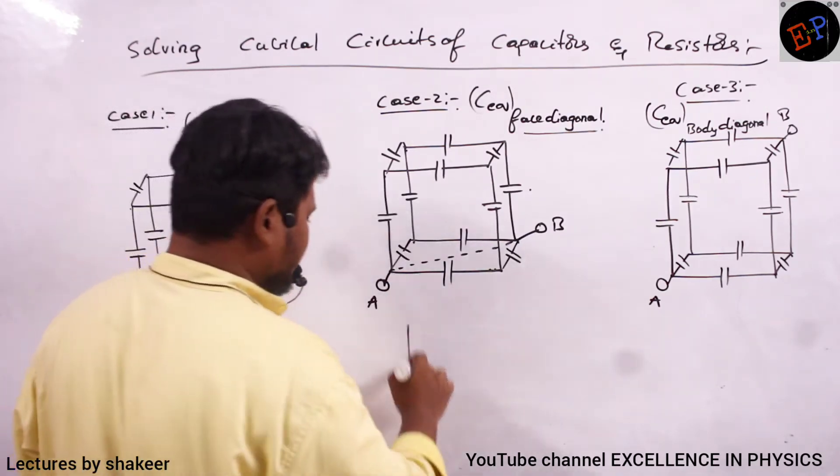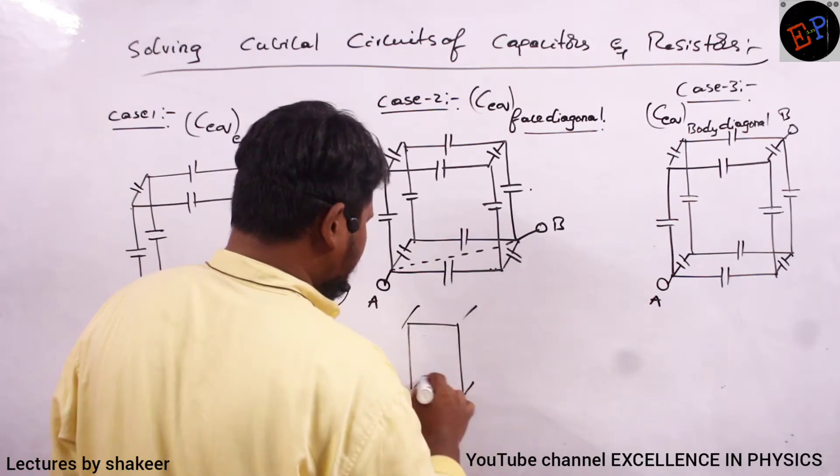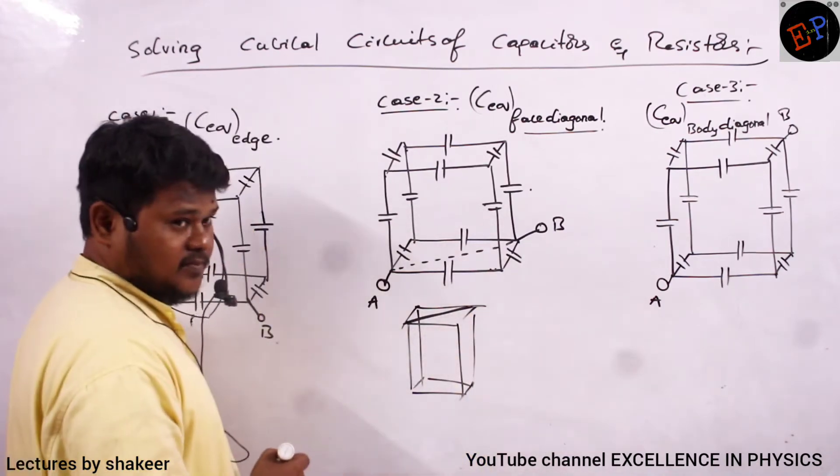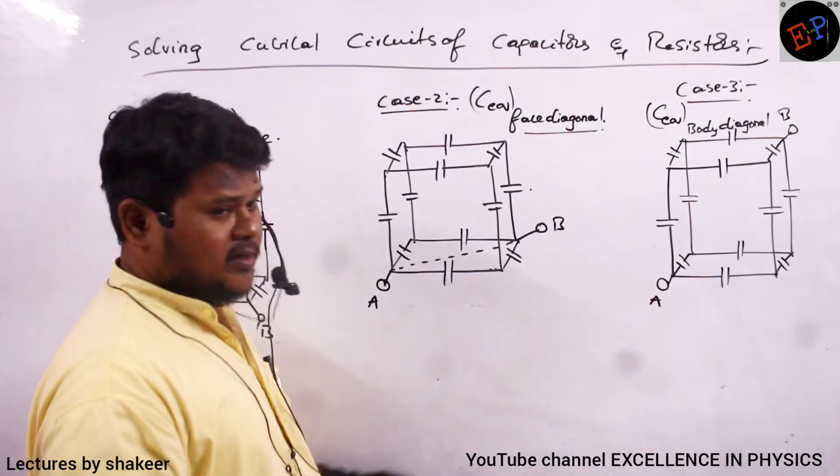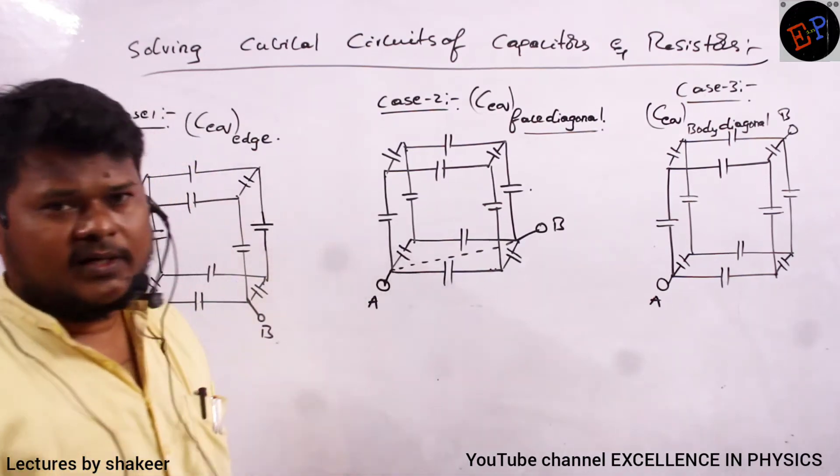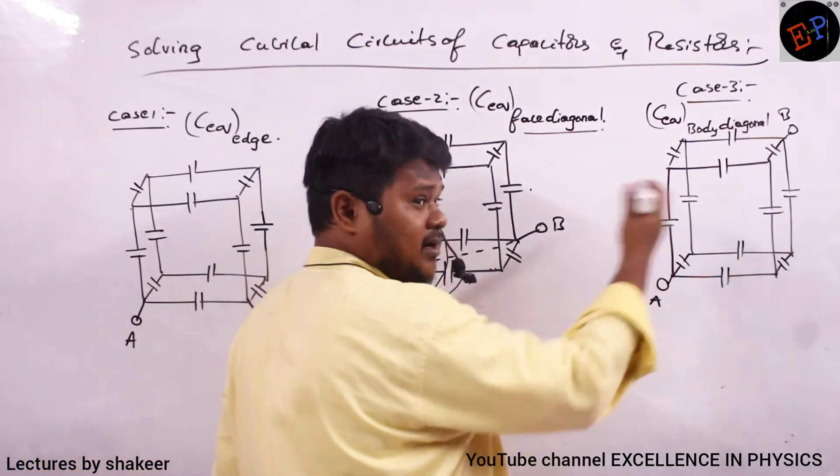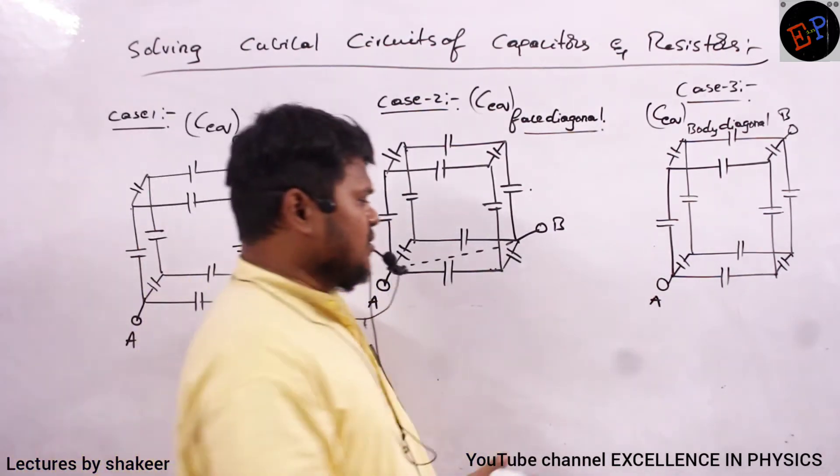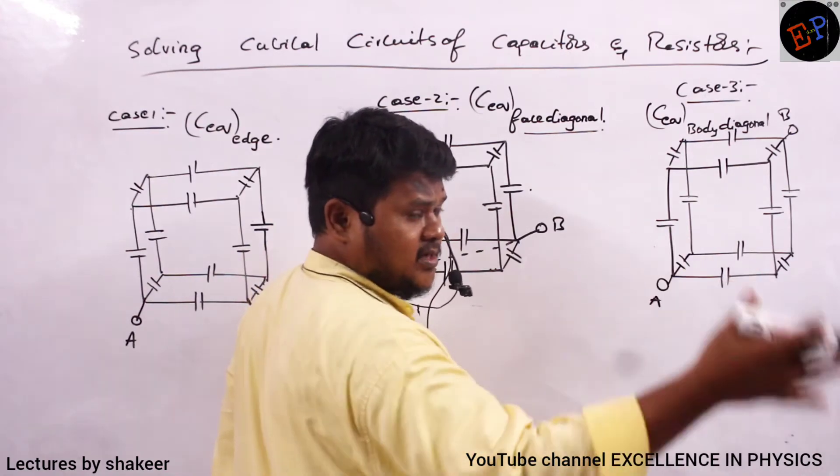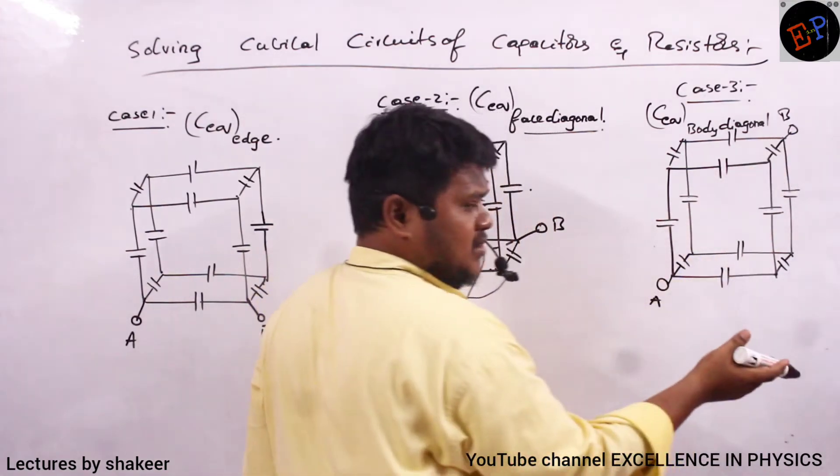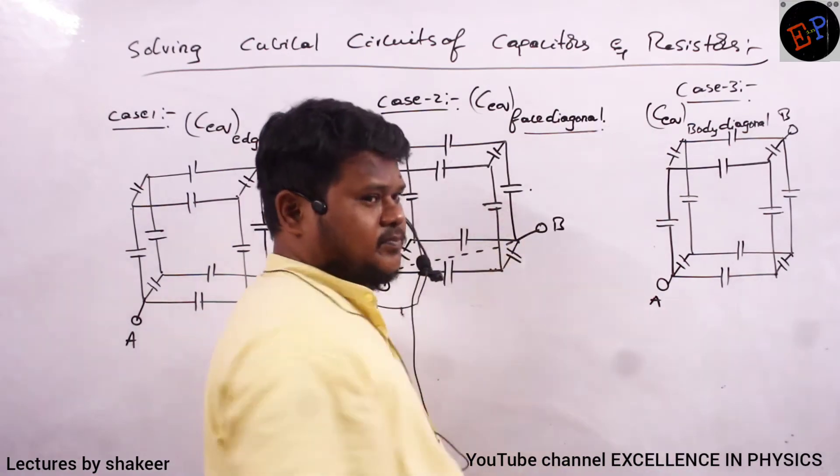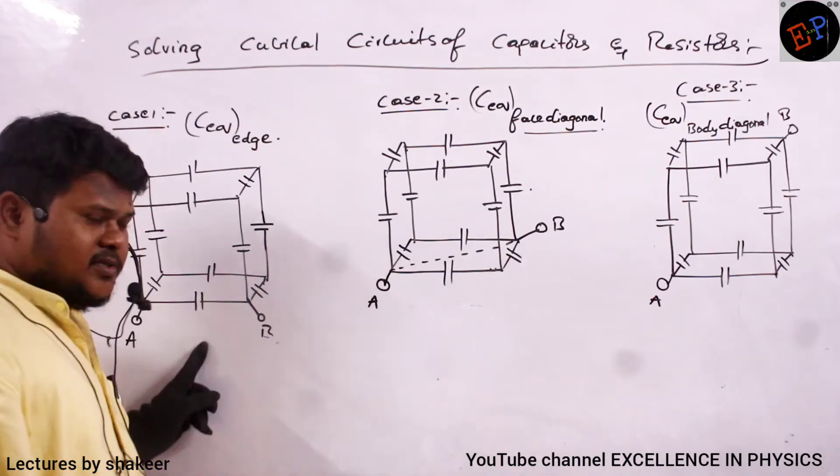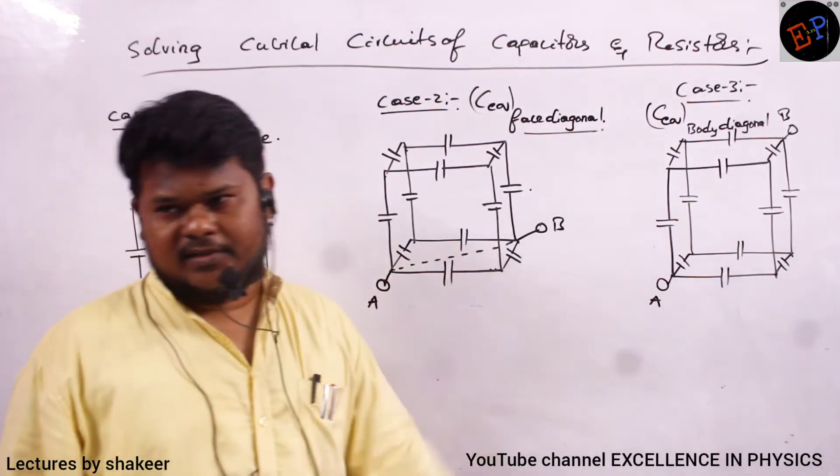So terminals are taken on face diagonal. And the third connection is body diagonal. For bodies also, I can draw diagonal, total body diagonal. So, this point A is present on the front side of the board. And this point D is present on the back side of the cube. And it will become the body diagonal. So, connections are at edges, face diagonals and body diagonals.